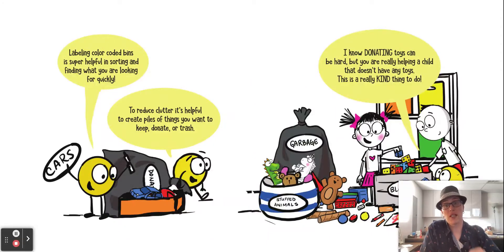Labeling colored bins is a super helpful way in sorting and finding out what you're looking for quickly. Those of you who like Legos as much as I do, probably have bins in your house that are labeled with the different kinds of Legos.